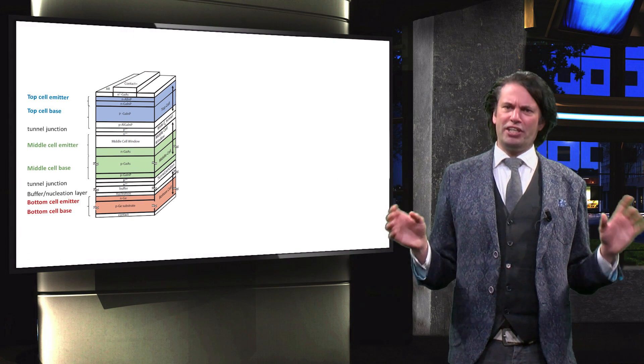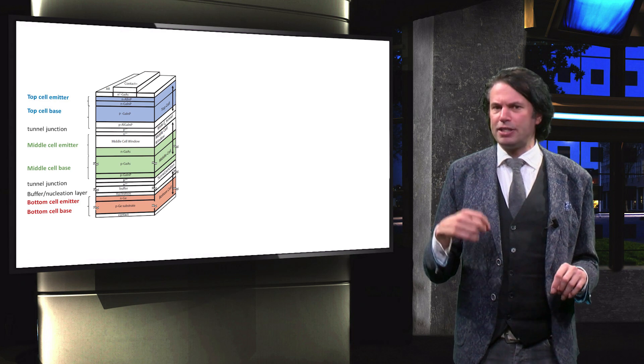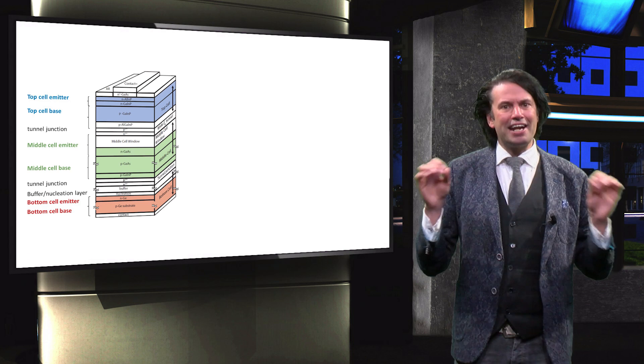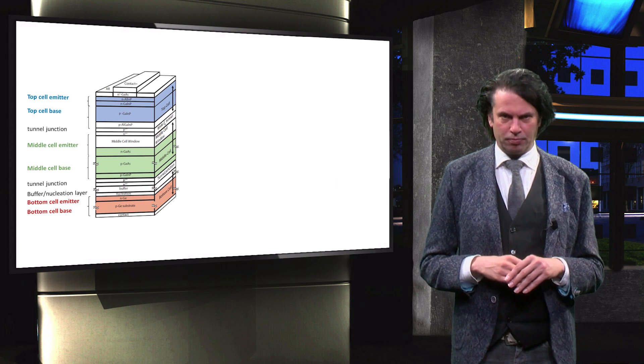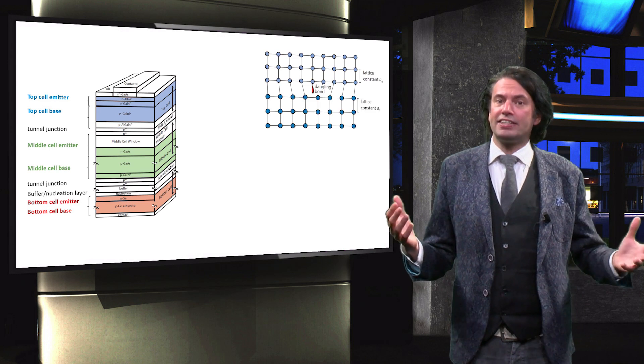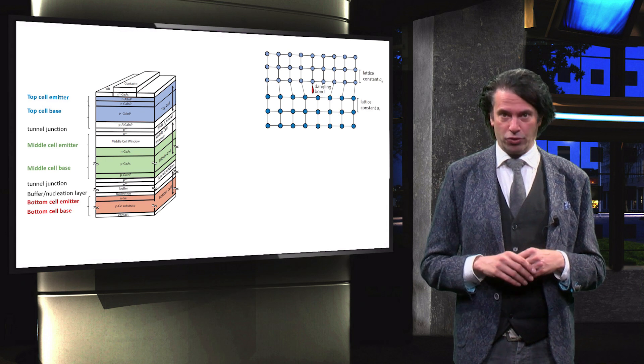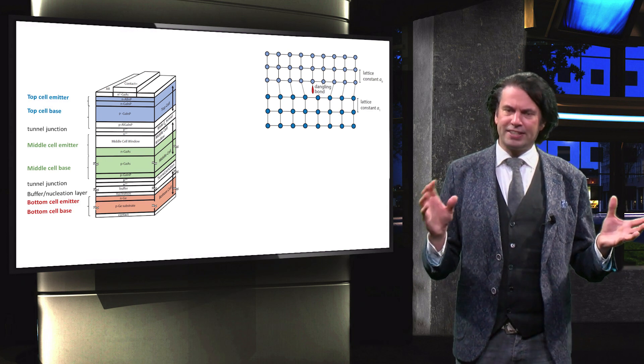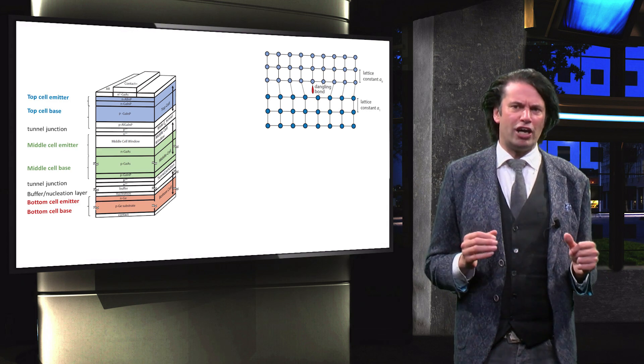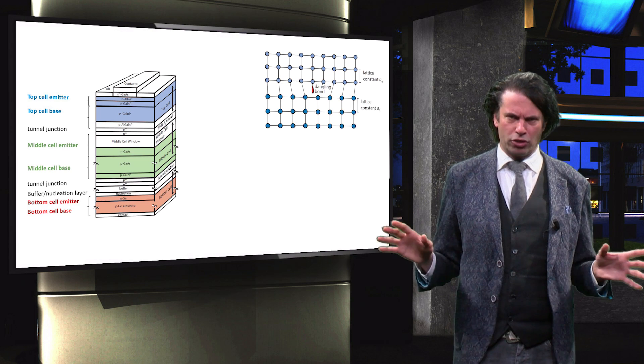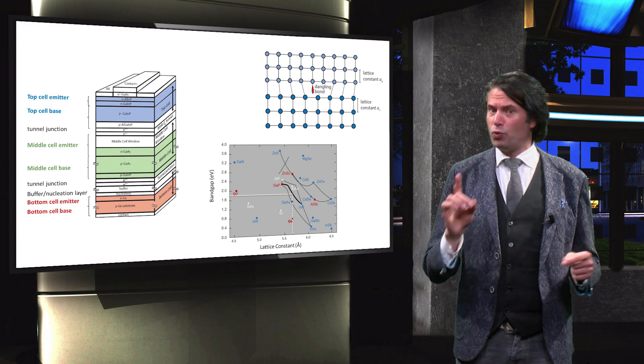In this video we discussed the structure of a typical 3-5 multijunction device architecture and its external quantum efficiency. We looked at the defects that can occur at the interfaces of two 3-5 semiconductor materials.